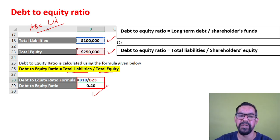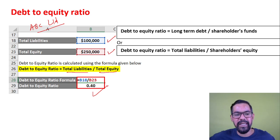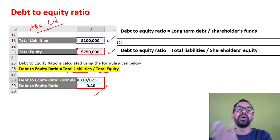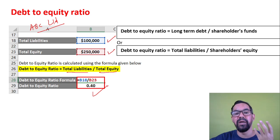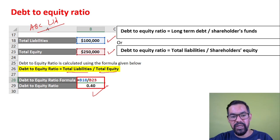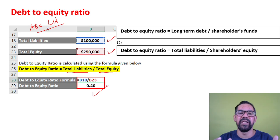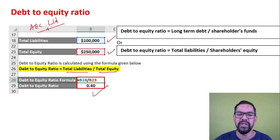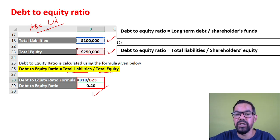So we have total liabilities divided by total equity: liability is 1 lakh and equity is 2 lakh 50 thousand, giving an outcome of 0.40. That is the debt-to-equity ratio. With the help of solvency ratio you are identifying the long-term viability of any company. When you do fundamental analysis you can use these ratios. Examiners can give you multiple entries for liabilities or equity — you just add them all up and apply the formula: total liabilities divided by total equity.